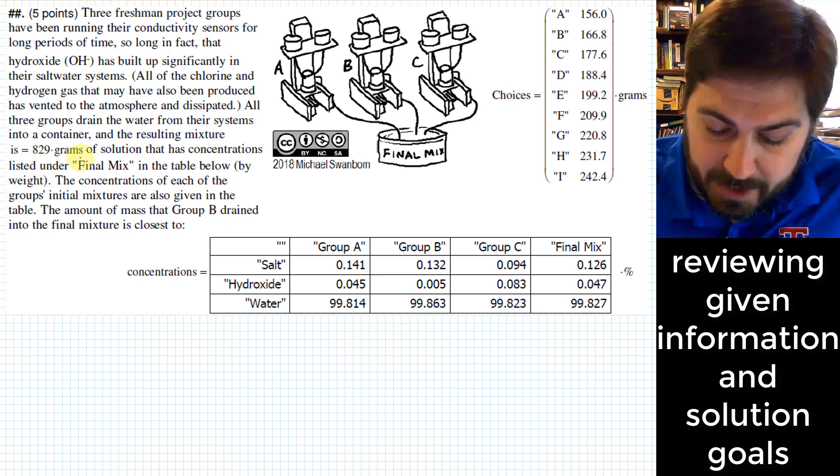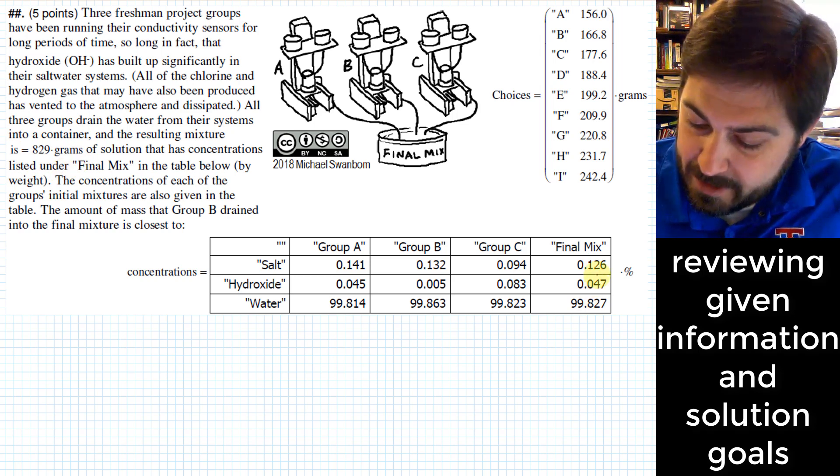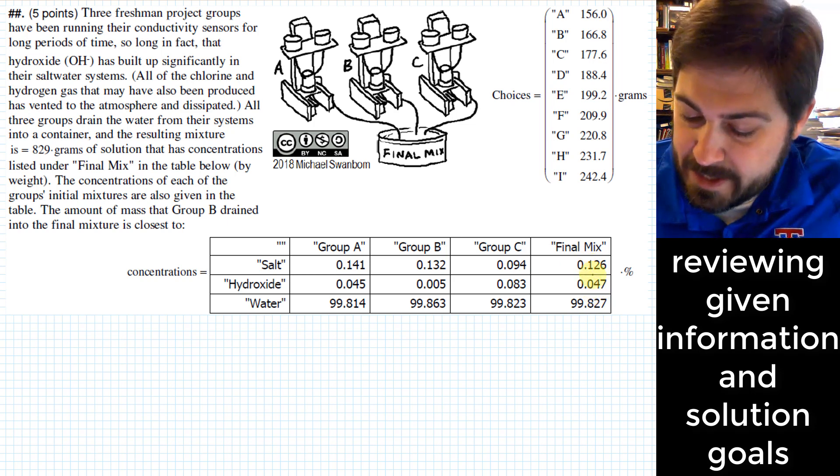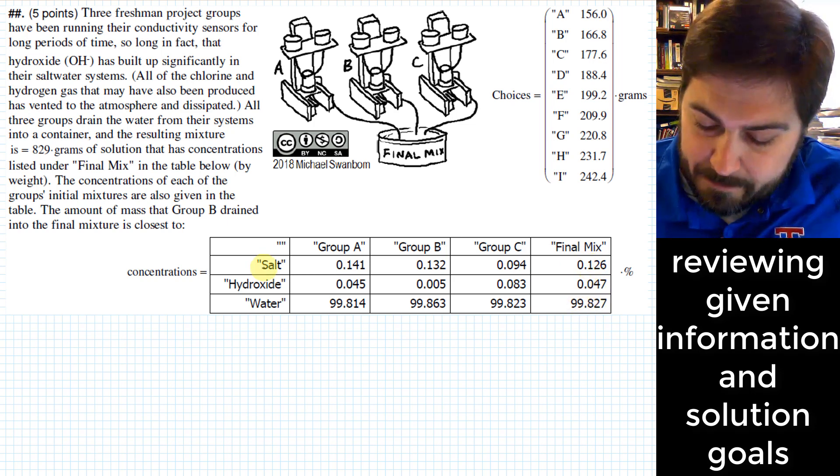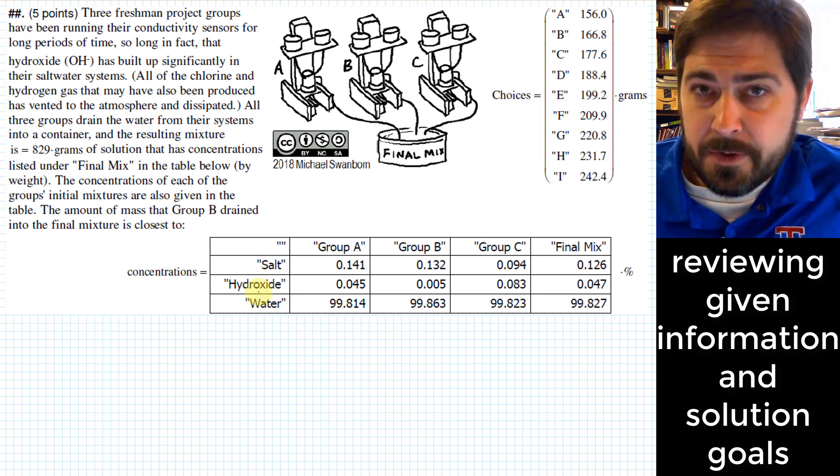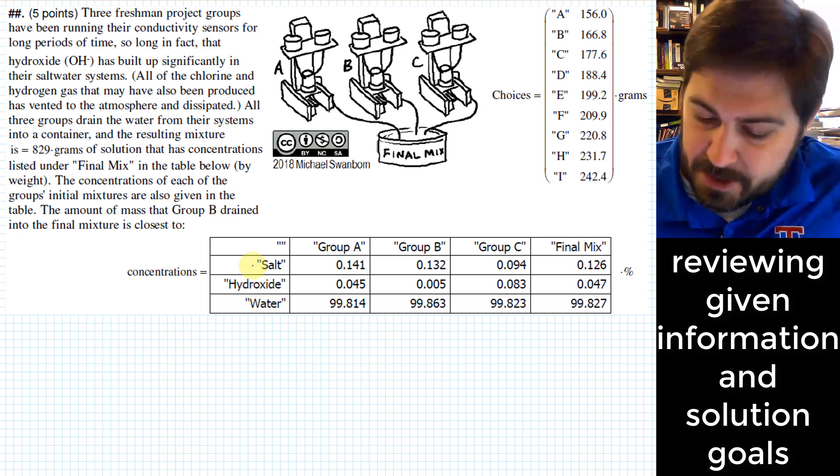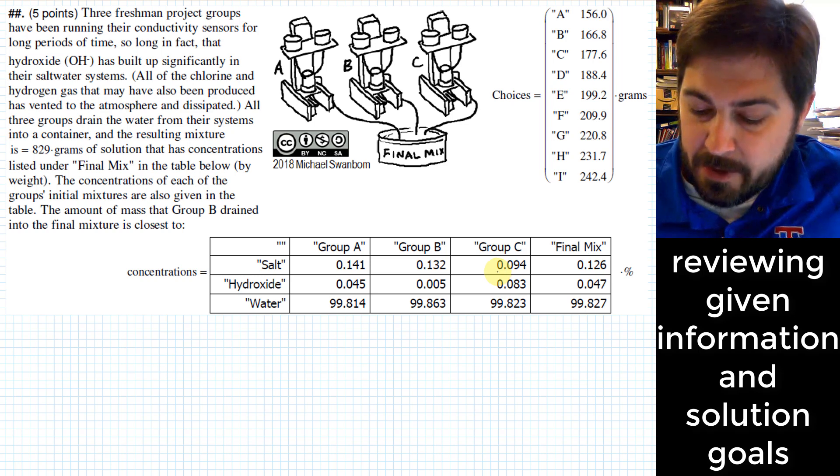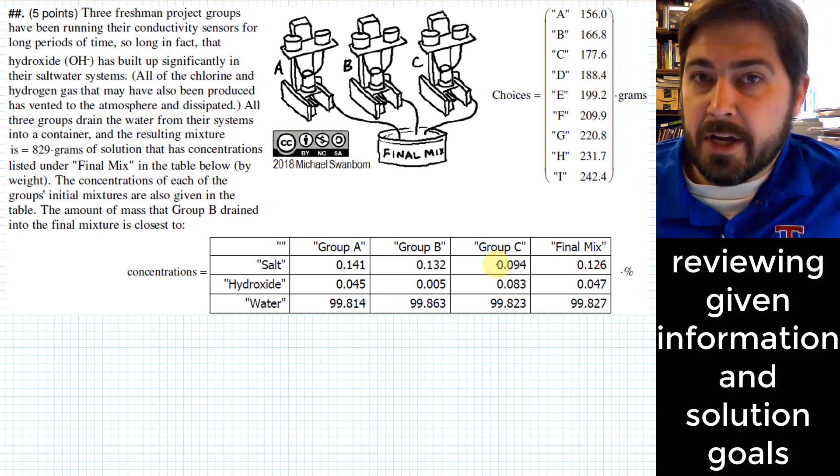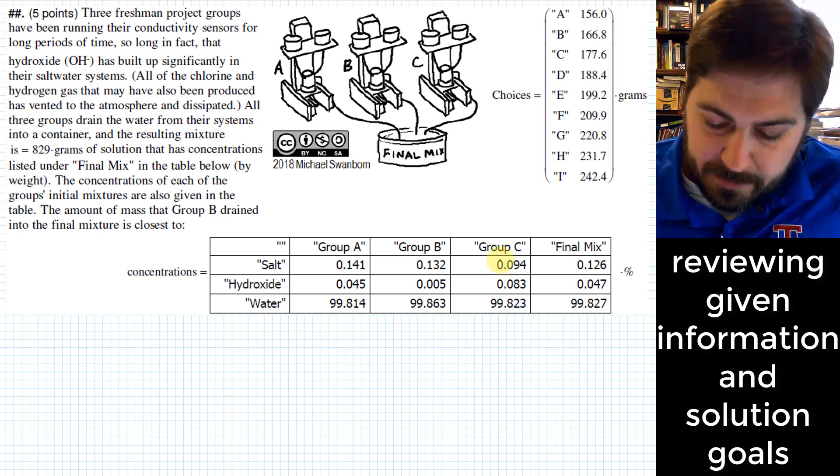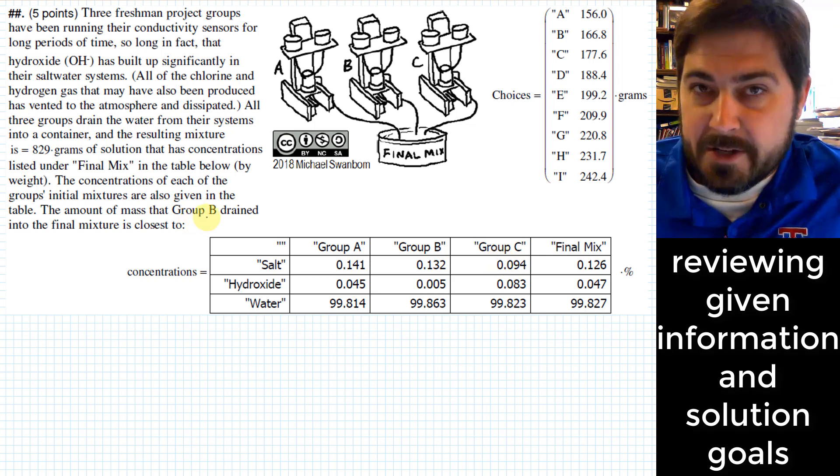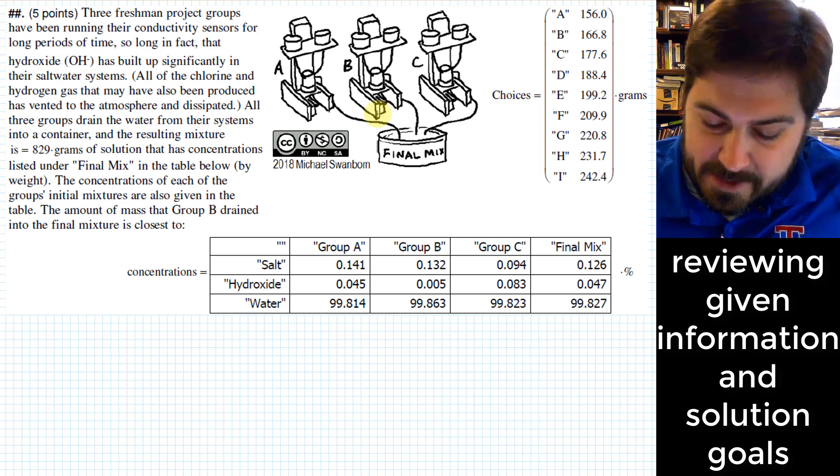And these three groups drain their systems all into a container and that container basically will at that point contain 829 grams of this solution that has this mix over here based on this mix of percentages of the various elements that are in there. We also somehow know what the composition is of the amount of water in group A's system as well as group B as well as group C. Well based on all of this system we can actually figure out how much mass must have drained from each one of these systems and the specific one we're asked to find is the amount of mass drained from group B from that system.